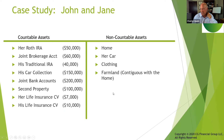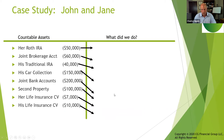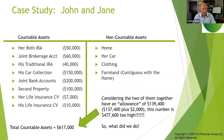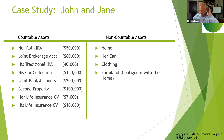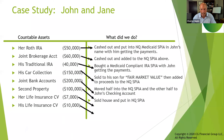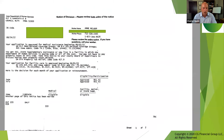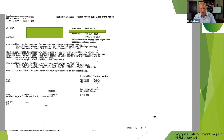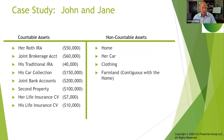Here is his situation — this is the real deal. From the Medicaid office, the Department of Human Services: 'Your application is approved for medical assistance beginning June 1, 2022.' That is the end result. So what was the beginning?